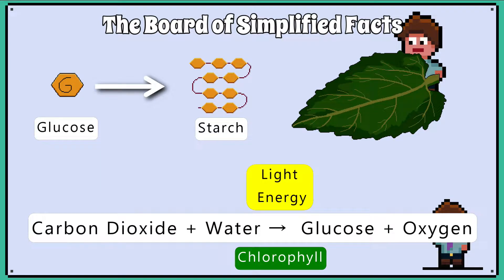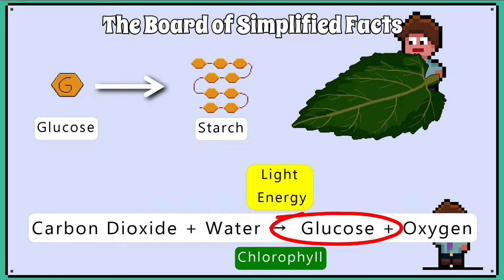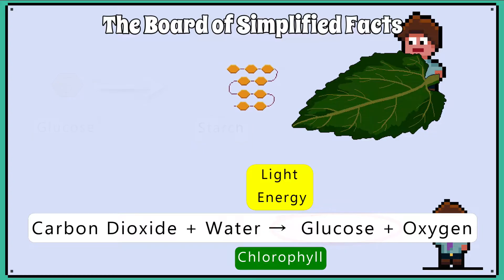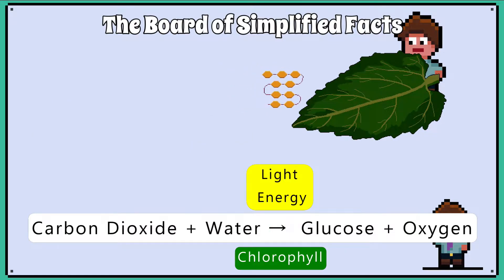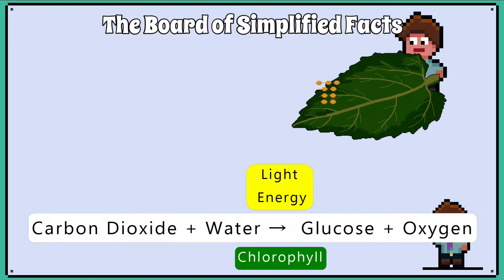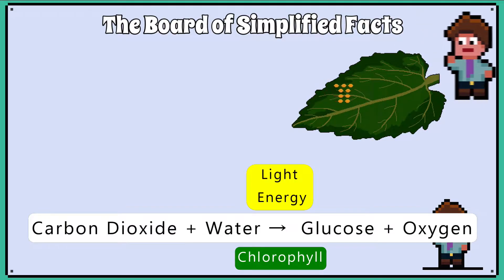Without photosynthesis, a plant can't make starch. Remember that glucose, a product of photosynthesis, can be converted into starch, and a plant will store starch in various places, including the leaf, where photosynthesis takes place.